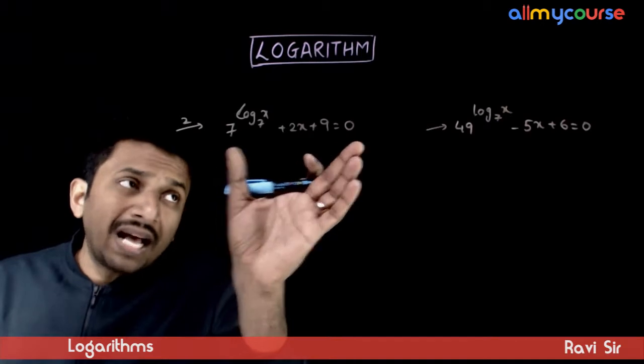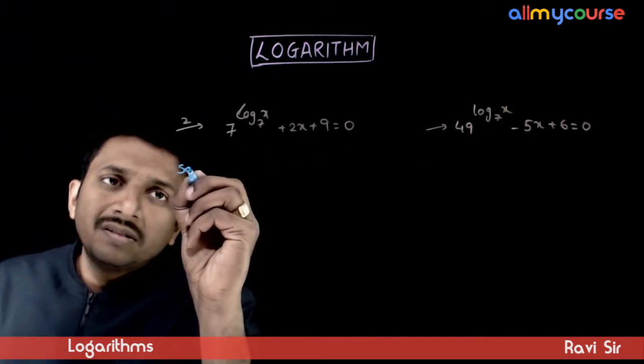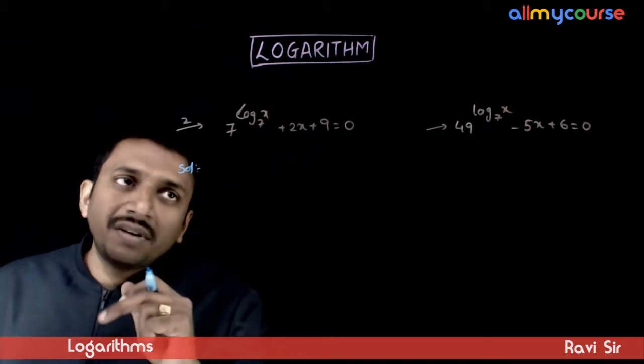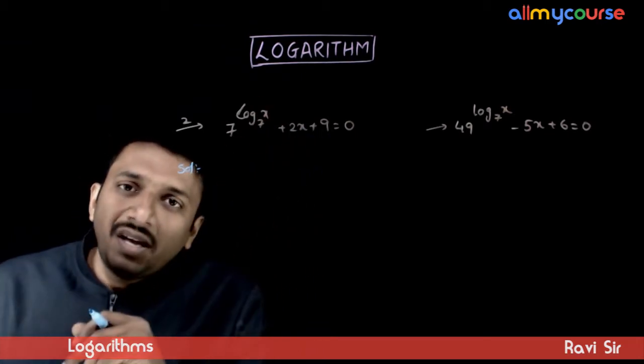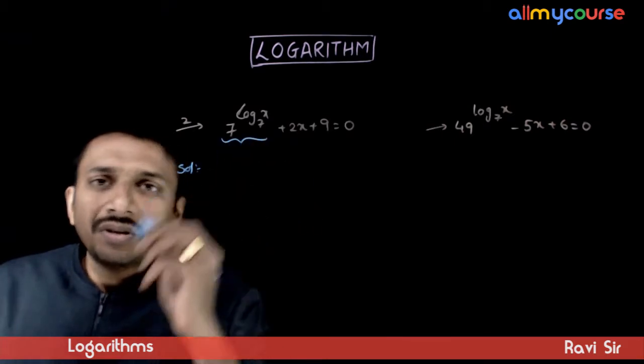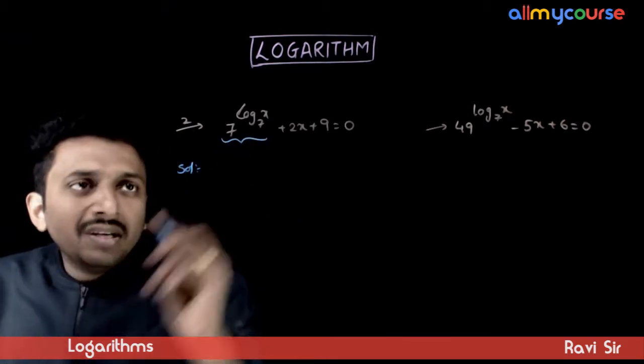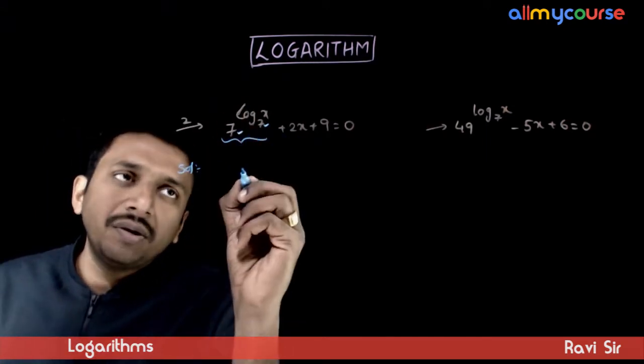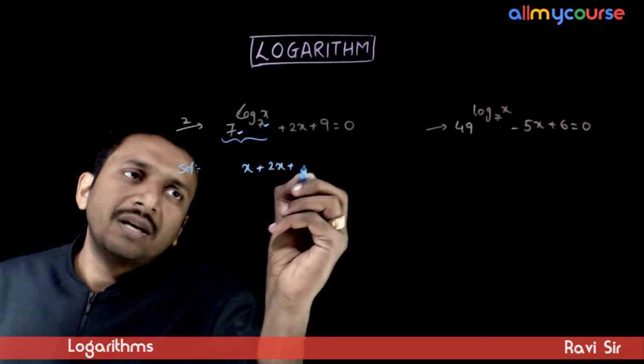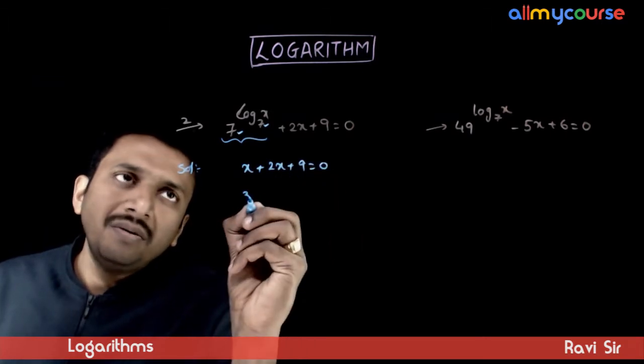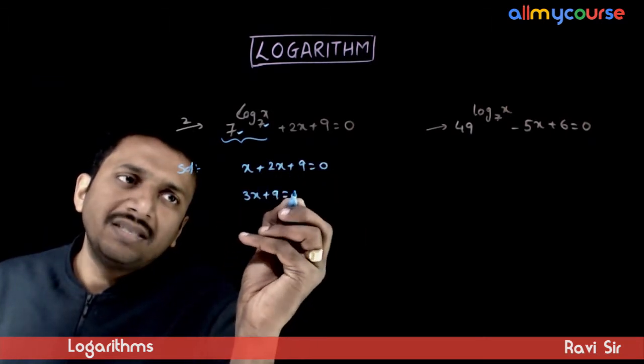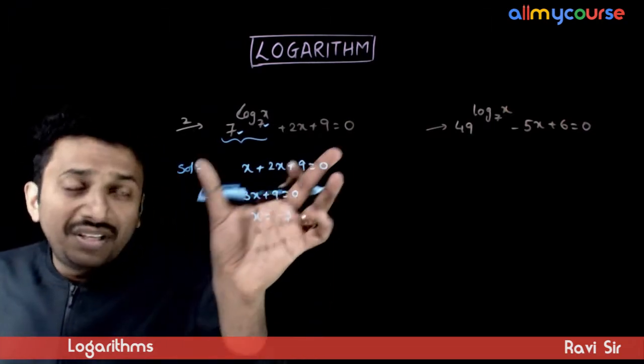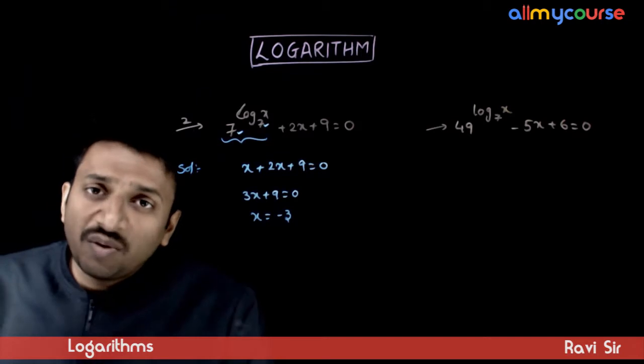In this question, you are asked to solve these equations. First equation is 7 power log x to the base 7 plus 2x plus 9 is equal to 0. Again, as you see this, you remember the simplification formula. We have 7 here and 7 here, so everything will get cancelled out. You get x plus 2x plus 9 is equal to 0. 3x plus 9 is equal to 0. x is equal to minus 3.